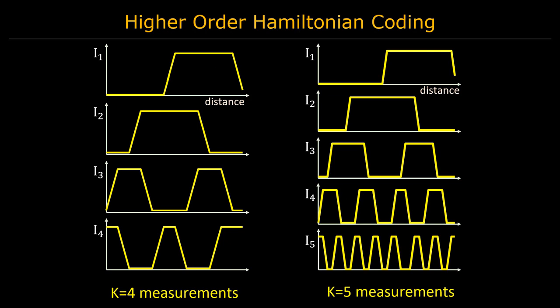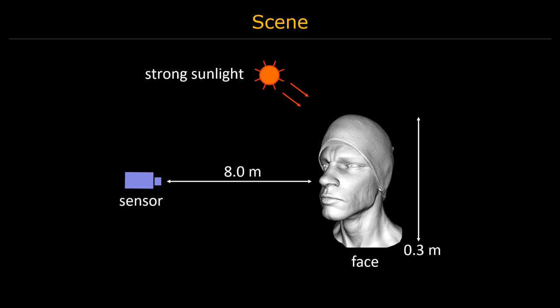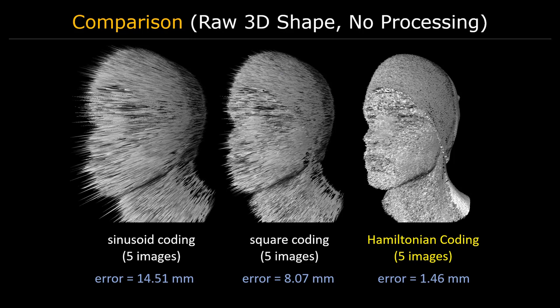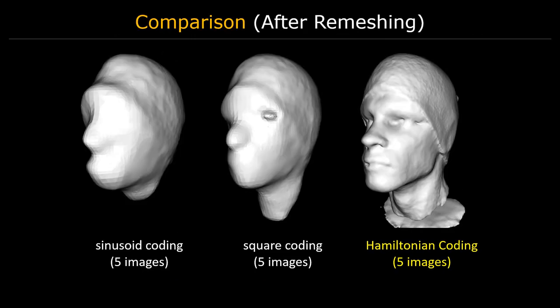These are the corresponding Hamiltonian correlation functions for the case of 4 and 5 measurements. We demonstrate the performance of Hamiltonian codes in a typical 3D scanning scenario. Hamiltonian codes achieve an order of magnitude lower depth errors, allowing them to recover fine 3D structures of the scanned face.